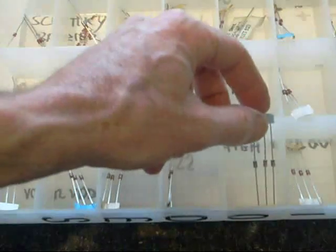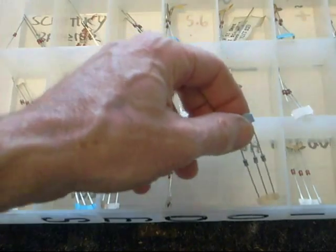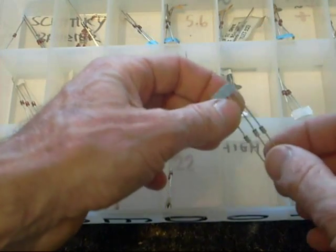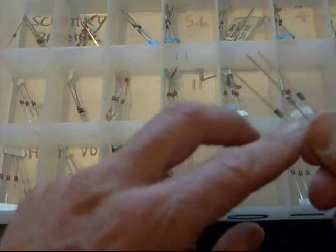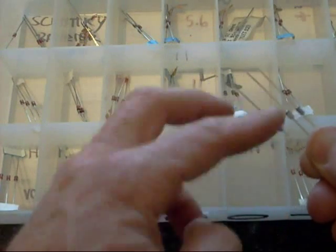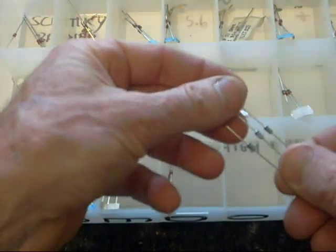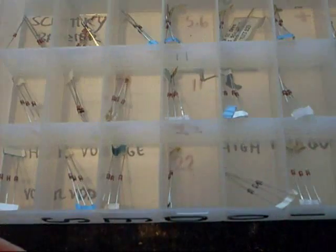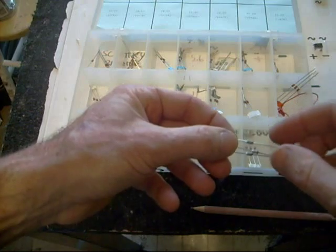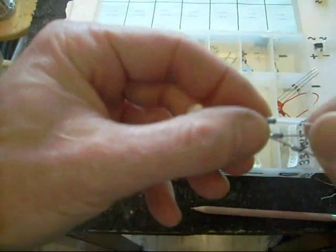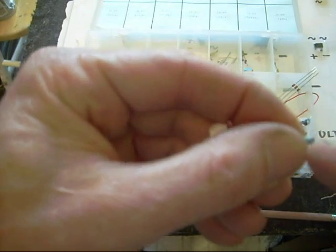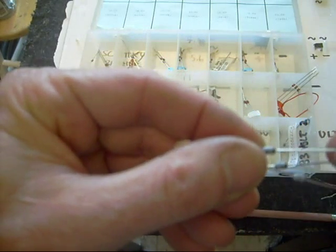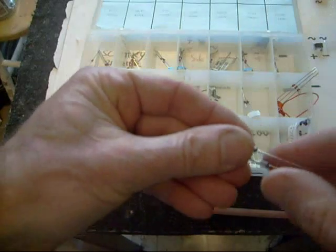Now when you're checking a Zener diode to see if it's gone bad, it'll generally check as any other diode would. You're looking basically for short circuits. In other words, if the diode goes bad, it'll begin to conduct in both directions rather than just in one direction. Zener diodes also have little numbers on the side of them. So if you ever have to identify the value of your Zener diode, carefully read the numbers off the side here. That'll usually help you out.